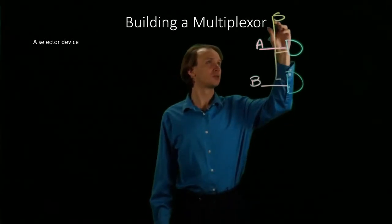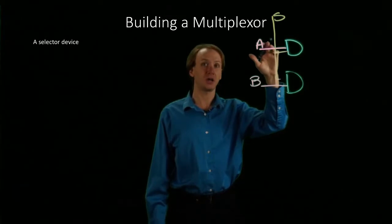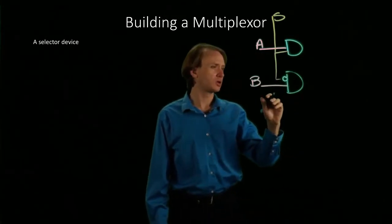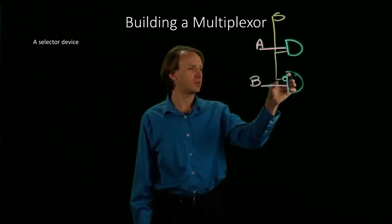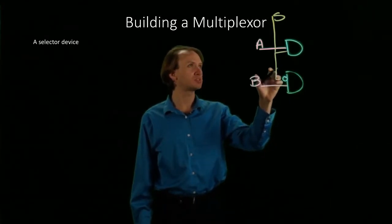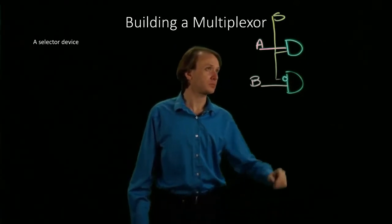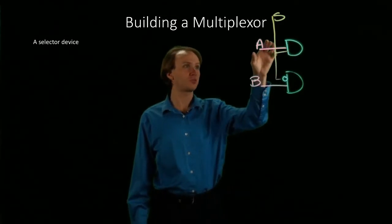If our selector line is true, we can take whatever is on the A line. But we're going to set this up so that for the B, we take the opposite of our selector line. So when our selector line is 1, this gate will produce whatever is on A,